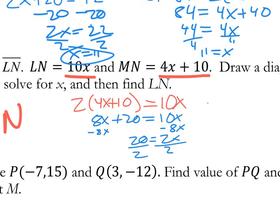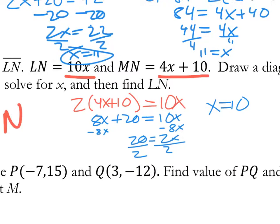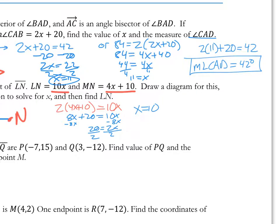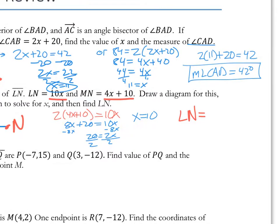Distribute: 8x plus 20 equals 10x. Subtract 8x from both sides: 20 equals 2x. Divide by 2 and x equals 10. By the way, x is not always a whole number, so don't expect it to be. LN is 10x, so plug in x = 10: LN equals 10 times 10, which is 100.